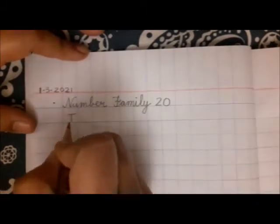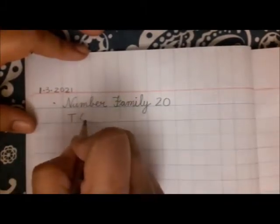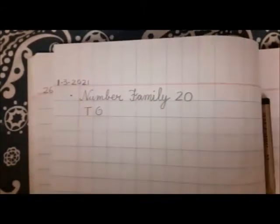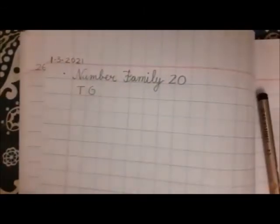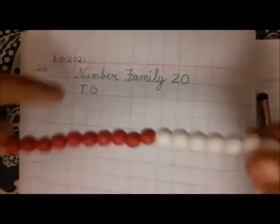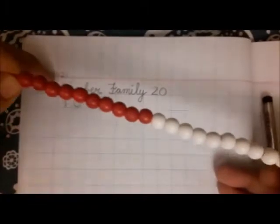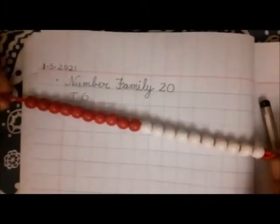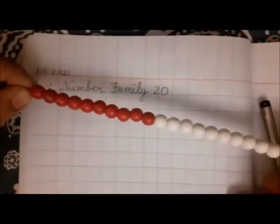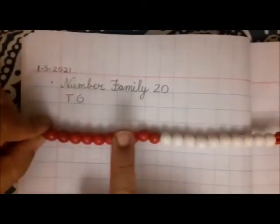Here write T-O. Now, number family 20. Get ready with your Ganitmala. Number family 20 are all those numbers with two tens. Twenty. See, this is two tens. One ten, two tens.